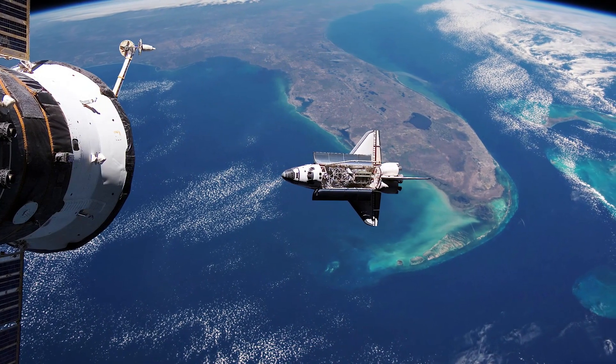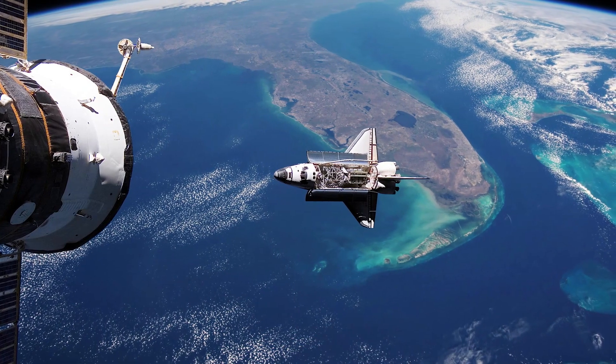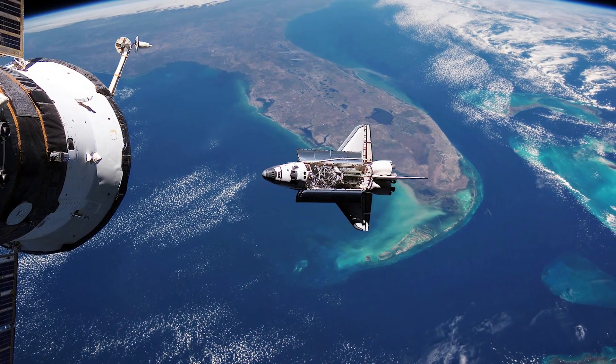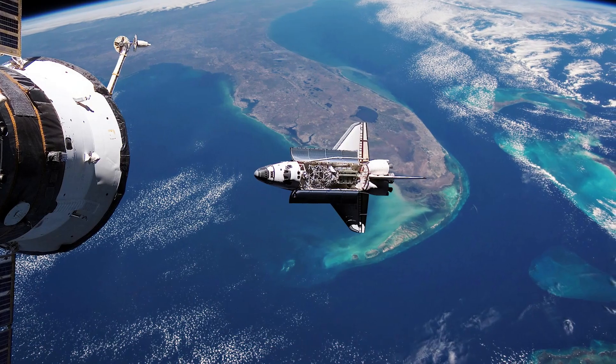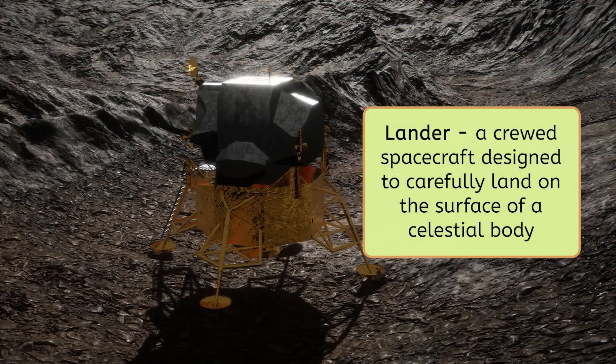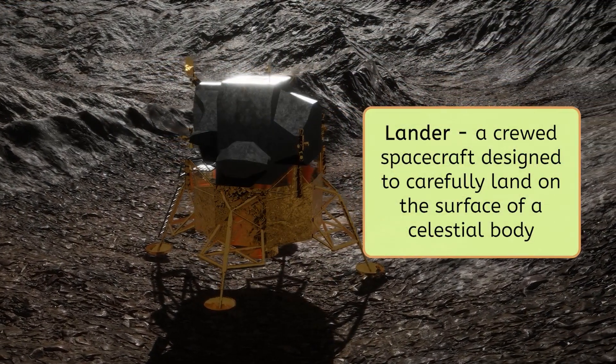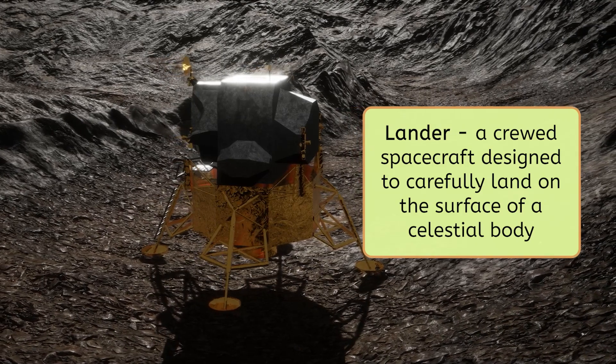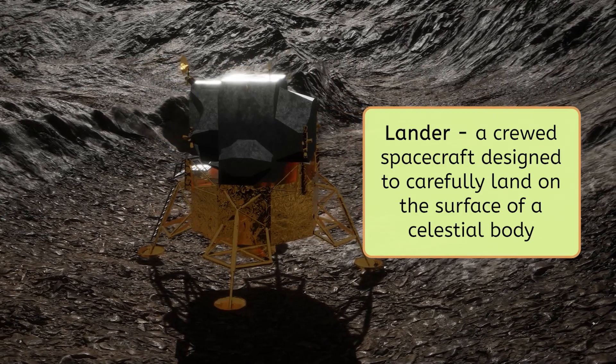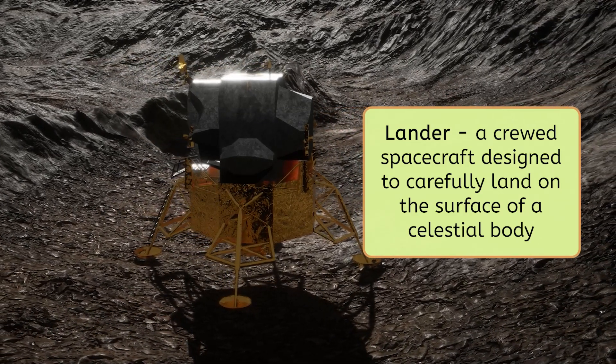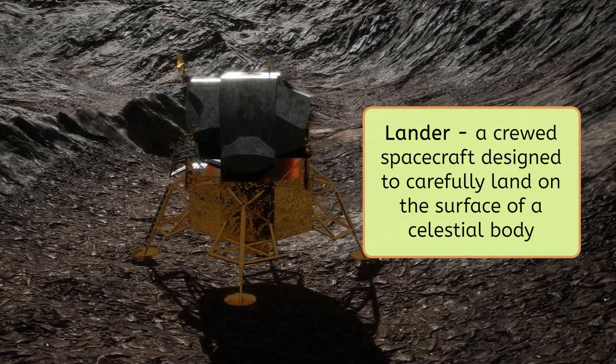During the missions where astronauts landed on the moon, they used a different kind of spacecraft called a lander. A lander is designed to carefully, gently touch down on the surface of a celestial body. Then, the crew inside can gather information about the place they landed.